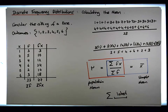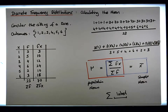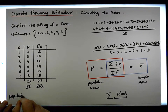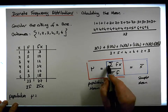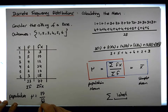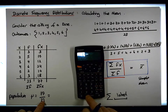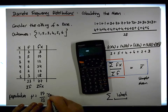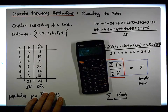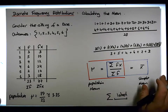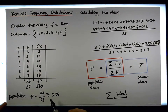Now we can calculate the mean — and context is important. If we were to calculate the population mean, mu, it would be the sum of the fx's, which is 77, divided by the sum of the f's, which is 23. That gives us 77 divided by 23, which is approximately 3.35. So the average value when we rolled the die 23 times is 3.35. If this was population data, that would be the average of the population.